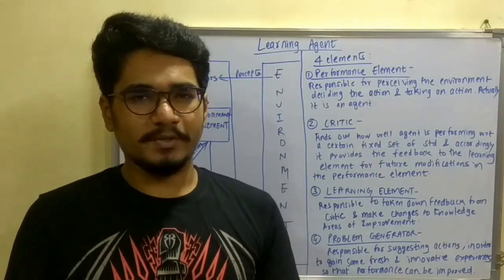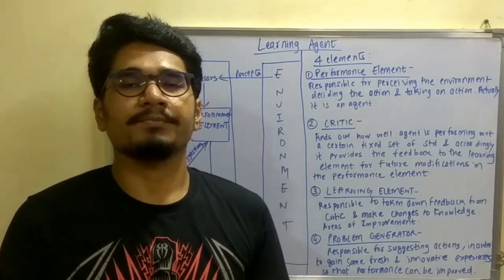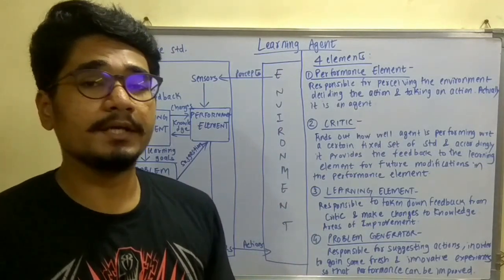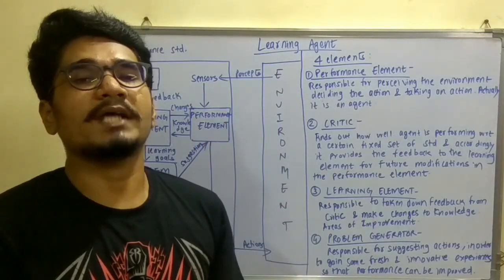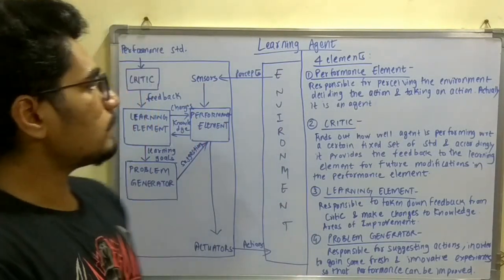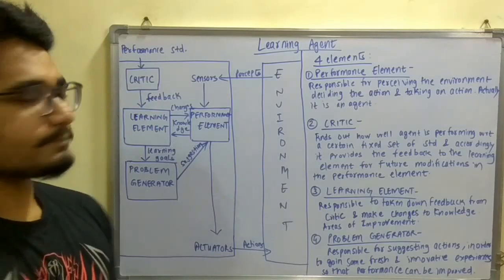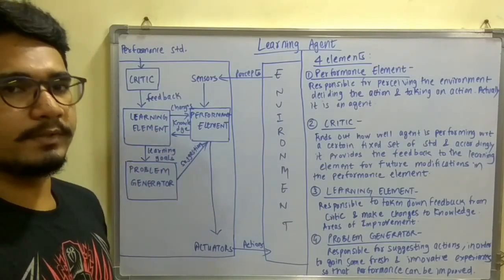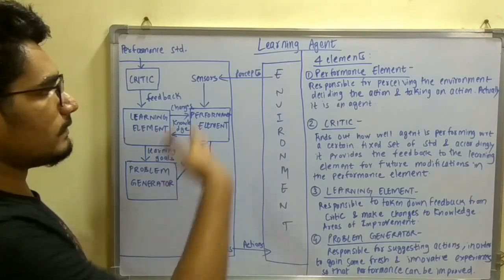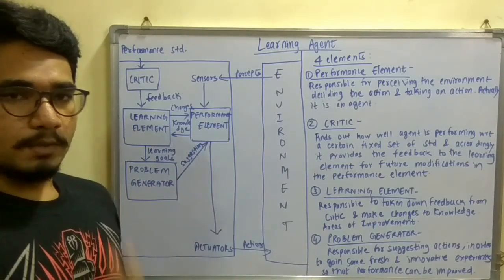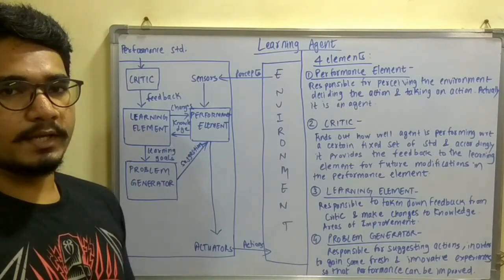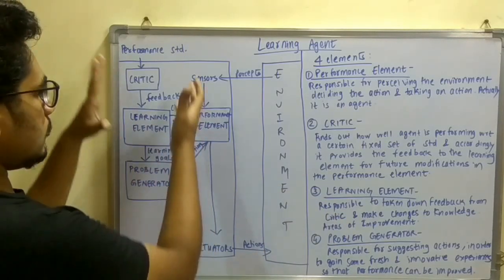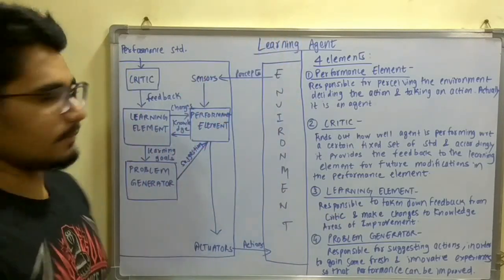Welcome back to my channel, this is Ranjiraj and you are streaming on the Study Beast. In today's video I will be discussing the learning agent, which is the fifth type of rational agent in AI. This agent is different from the other four types we have seen: the simple reflex agent, model-based agent, goal-based agent, and utility-based agent.